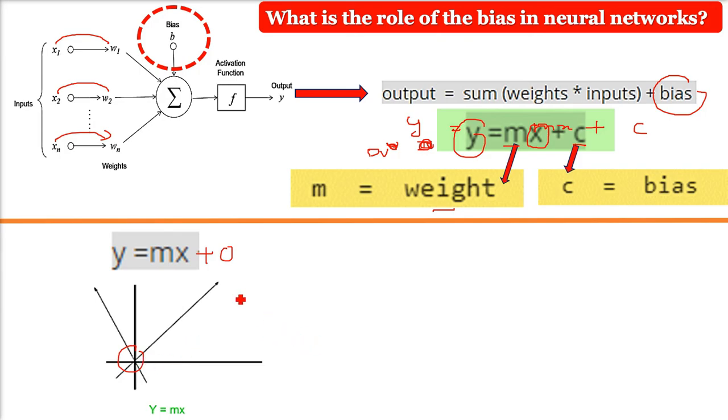With the introduction of bias, the model will become more flexible. This is the real world scenario. Otherwise, it will always pass through the origin, which we do not want. That is why we have a bias.